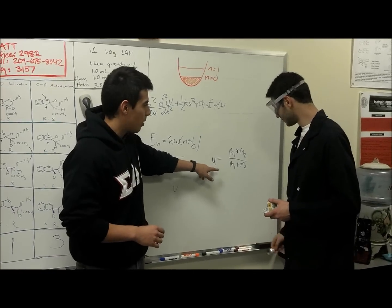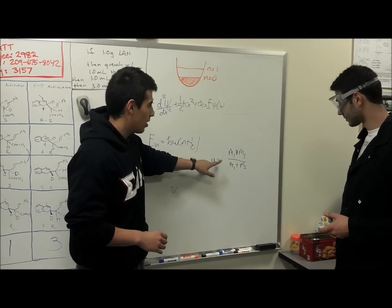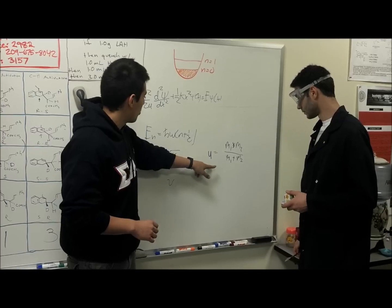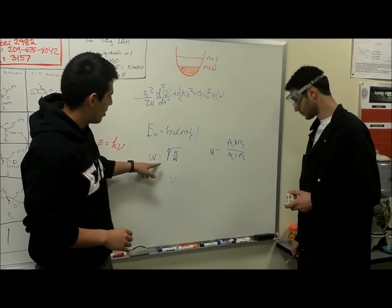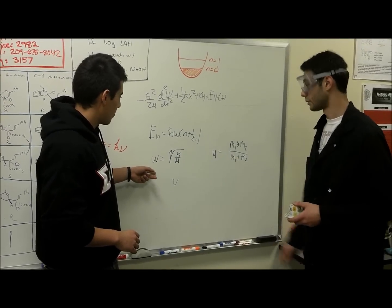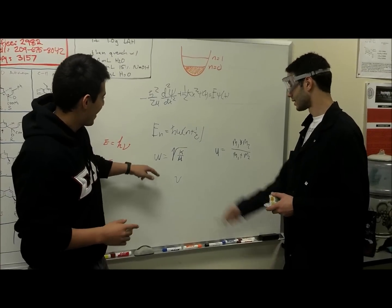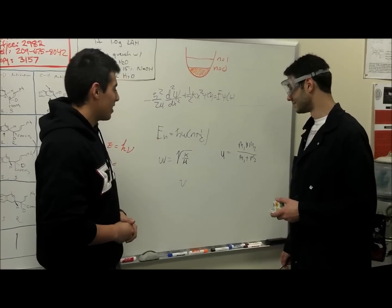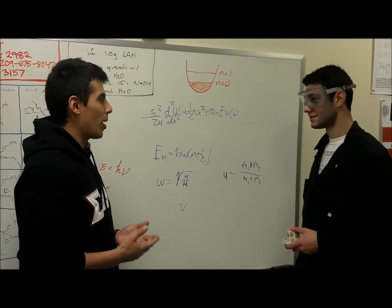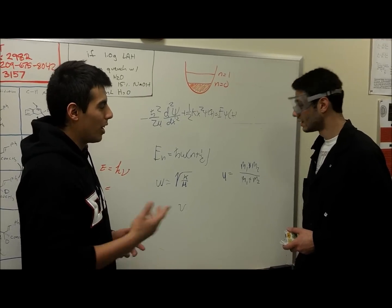So now when we plug into our mu, our reduced mass equation, we'll have a higher mass, right? Exactly. Reduced mass. Yeah. When we plug it into omega, we'll have a lower omega. Exactly, because it's in the denominator. Right? And in turn, when we plug into our energy equation, we're going to have a lower energy, which translates to a lower vibrational zero point energy for the heavier one.